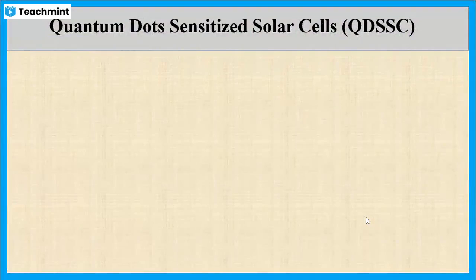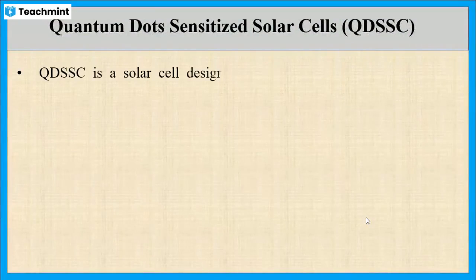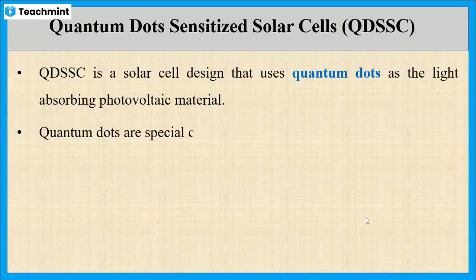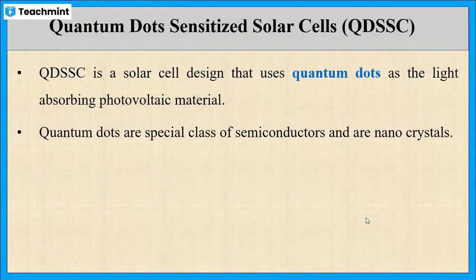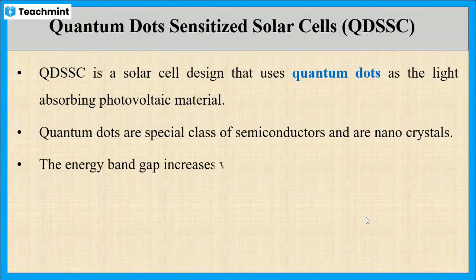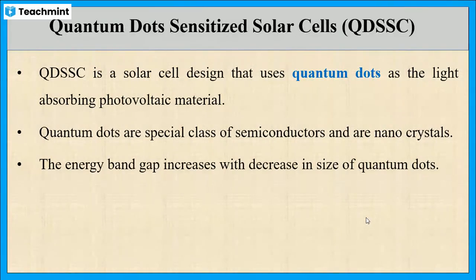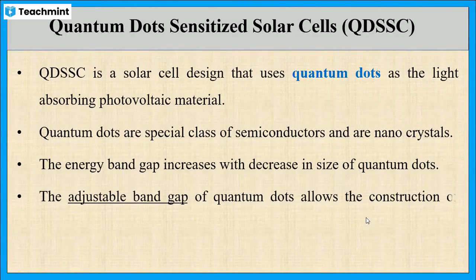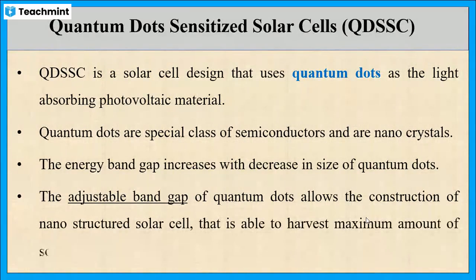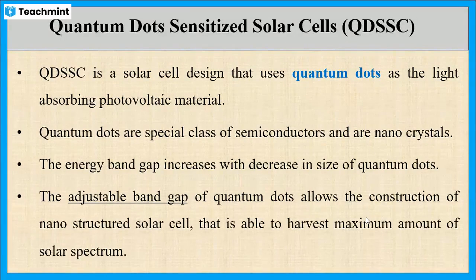Now let us see what quantum dots are. These are a special class of semiconductors which are nano in size. As the size of the quantum dot decreases, the energy band gap increases, which gives rise to variable optical properties. The advantage of quantum dots is that the band gap can be adjusted by varying the size, so that it will absorb maximum photons from solar light.